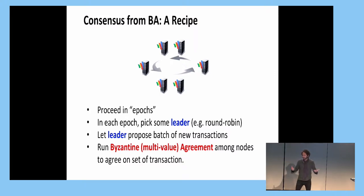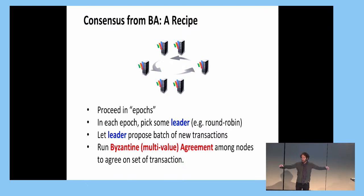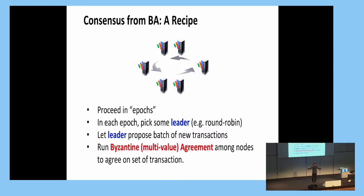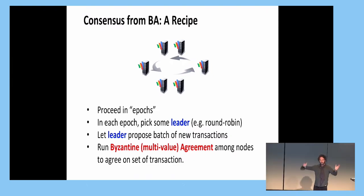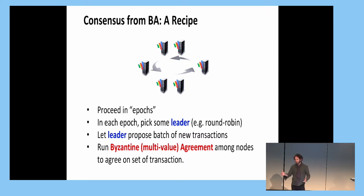The leader proposes a batch by sending it out to everybody else. Then all the nodes run something called a Byzantine agreement protocol to agree on this batch of transactions. Once they have agreed on this set of transactions, we say that batch has been added to the ledger and has been confirmed.